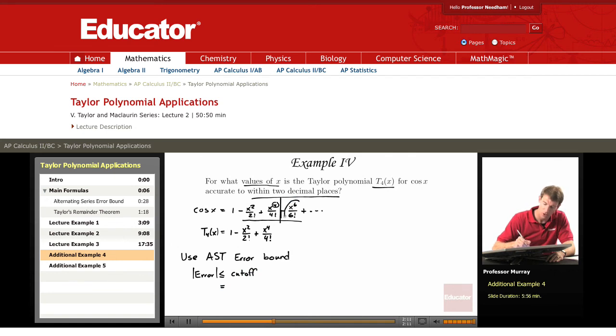And so in this case, the cutoff term is x to the sixth over 6 factorial. Remember in the alternating series error bound, that was a_n plus 1. But an easier way to think of that is just as the cutoff term. So that's x to the sixth over 6 factorial.